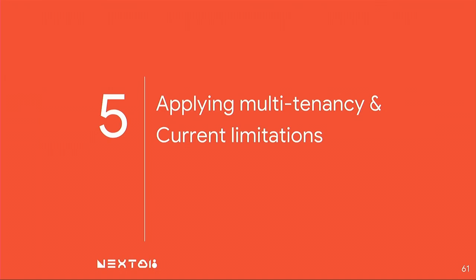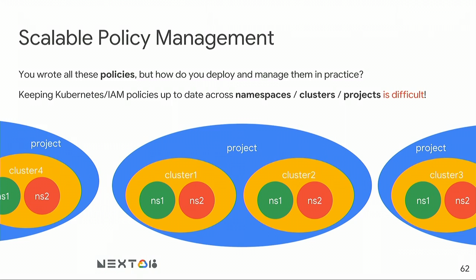We've covered multi-tenancy, but there are areas still being worked on. Policy management is a real challenge: when Ahmed was discussing RBAC, policies, and YAML files, doing just one is already complicated enough. But if you're responsible for providing that environment for a large organization with many projects, maintaining consistent and up-to-date YAML policies at scale is not going to be scalable. How do you ensure consistency across different projects and teams over time?